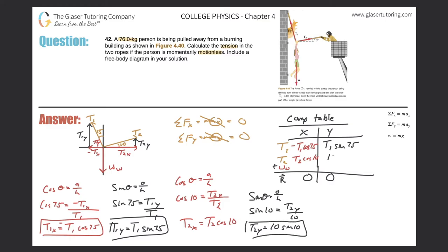I made an error there — I mistakenly wrote '10' instead of T2 in the equation. That's where the mistake was. To correct it: T2y = T2·sin(10°). Apologies for the confusion.